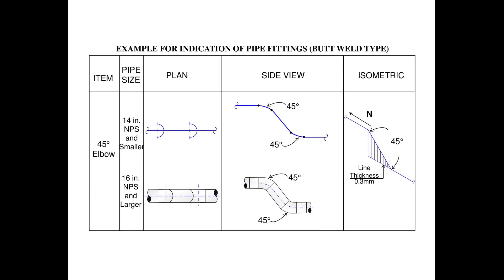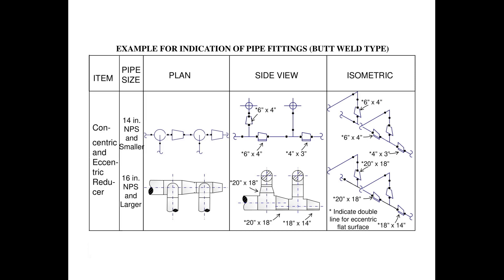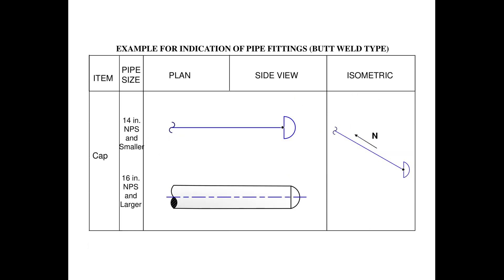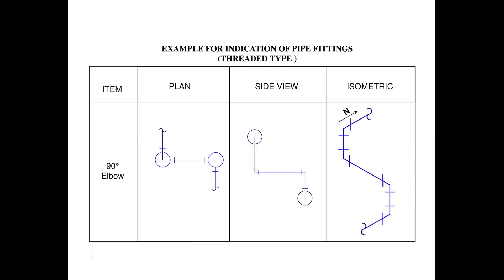Piping and instrumentation diagram symbols detailed documentation provides a rich set of shapes and symbols for documenting P&ID and PFD, including shapes for instruments, valves, pumps, heat exchangers, mixers, crushers, vessels, compressors, filters, motors, and connecting shapes.